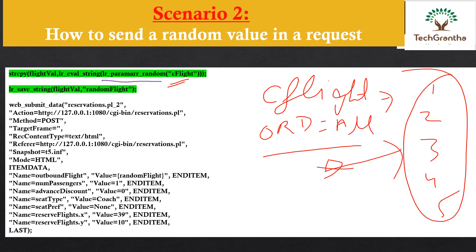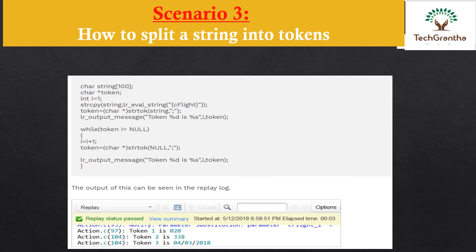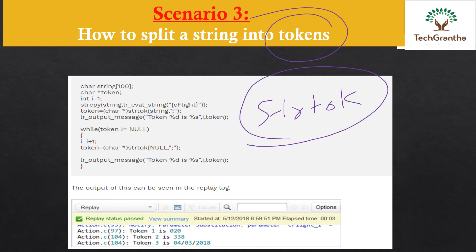Since the captured value is a string, we need to do a conversion using value_string, and then copy that into our flight value parameter to pass it in the next request. That is the second scripting challenge. Now for the third scenario: if you have an address or flight details and need to split the string, we use the token concept. The function used for splitting is strtok.